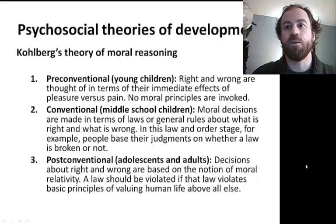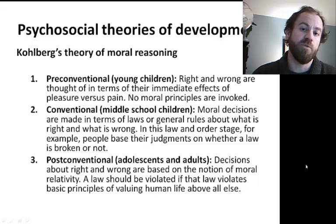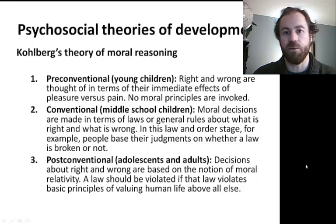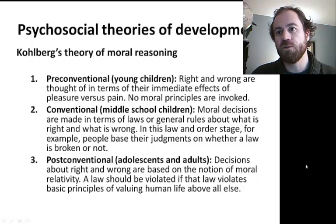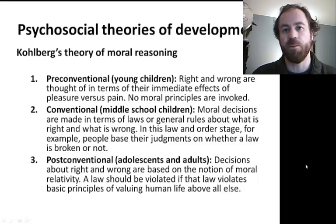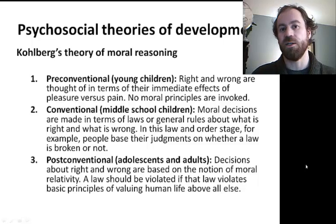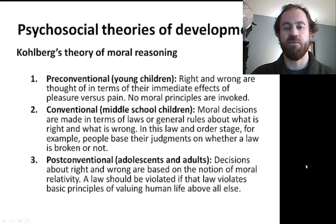At the pre-conventional stage, young children determine right and wrong in terms just of reward and punishment. When I ask my six-year-old to go and clean her room, she does this either in hopes of getting a reward afterwards or to avoid punishment, not because she believes that cleaning her room is simply the right thing to do. By middle school-age, moral decisions are made more in terms of laws or general rules — children at this age are often very sensitive to fairness, and believe that rules should not be broken in any context. My other daughter, who is a little bit older, loves to point out when I'm speeding that the speed limit is 35, and cannot really understand that there are some situations when we have to go a little more than 35, like when we're late for gymnastics class.